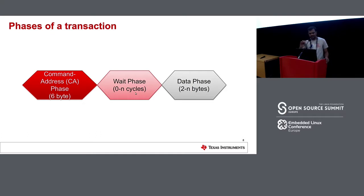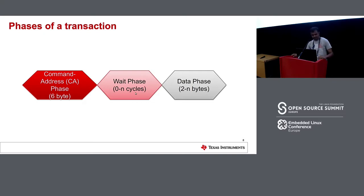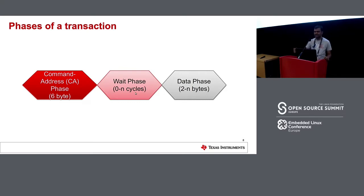This is how we can divide a transaction on a HyperBus. There are three phases: command address phase, wait phase, and data phase. In the command address phase, it indicates what type of transaction it is and what address it targets — this phase is always driven by the master. The wait phase is where the host waits for refresh to complete or for the flash to start sending data, and then the data phase, depending on the transaction, is driven by either the host or the device.